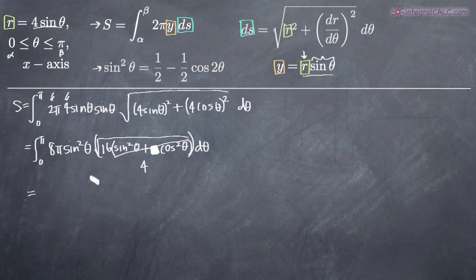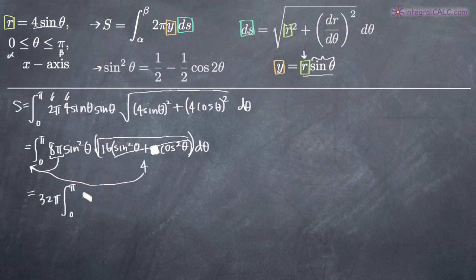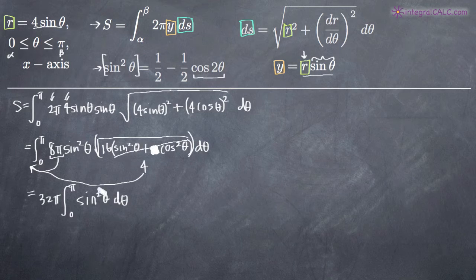We can pull the 8π and the 4 out in front of the integral. When everything inside the integral is multiplied by a constant coefficient, you can pull it out front. So 8π times 4 gives us 32π out in front, and we're left with the integral from 0 to π of sine squared theta d theta. At this point, we use the double angle formula for sine squared theta, which lets us substitute and eliminate that higher-order trig term — replacing sine squared with a first-power cosine expression.